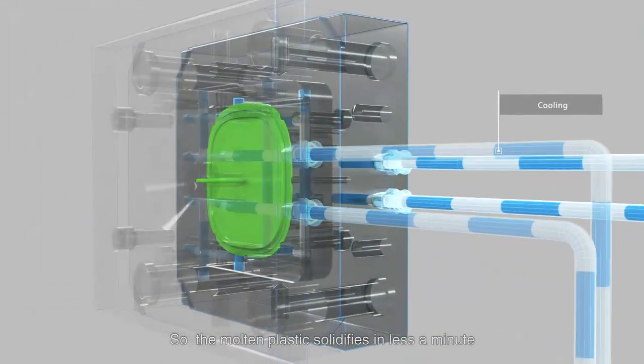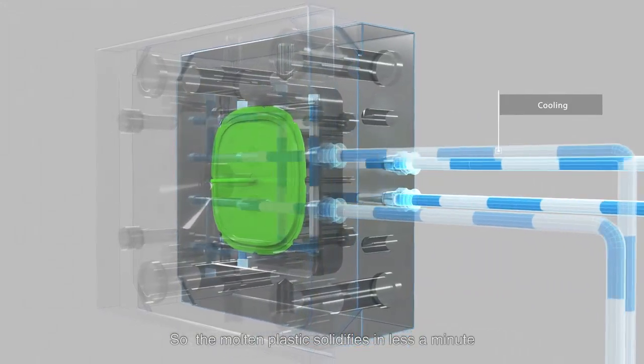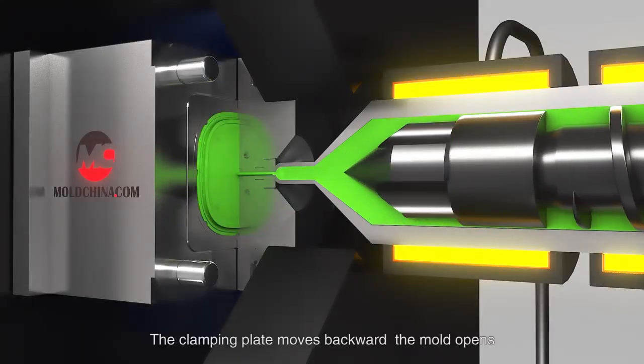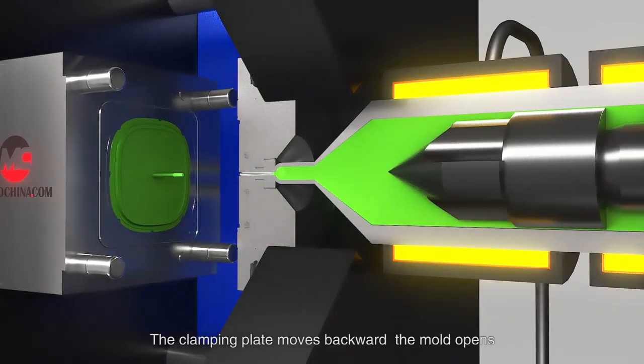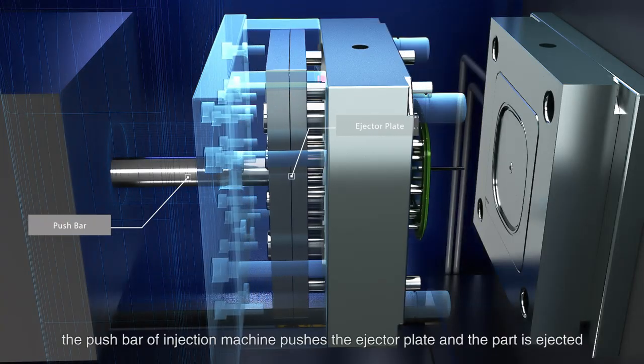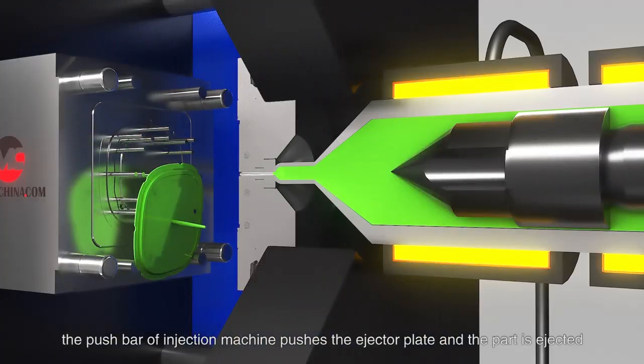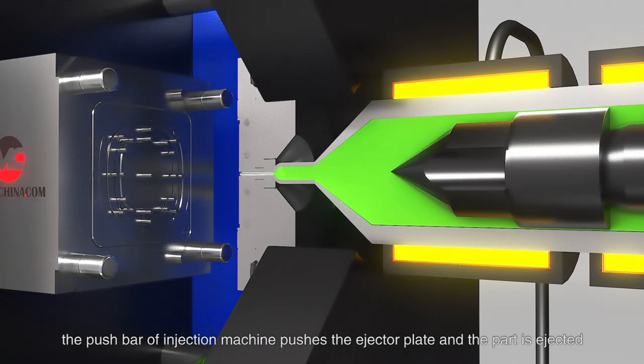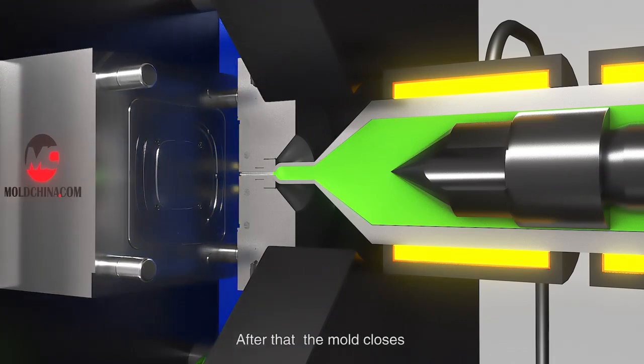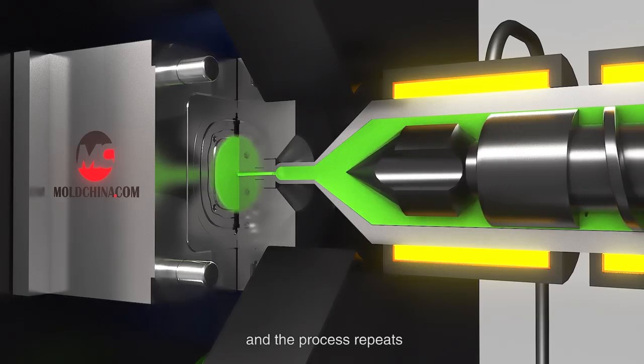The clamping plate moves backwards, the mold opens, and the push bar of the injection machine pushes the ejector plate so the part is ejected. After that, the mold closes and the process repeats.